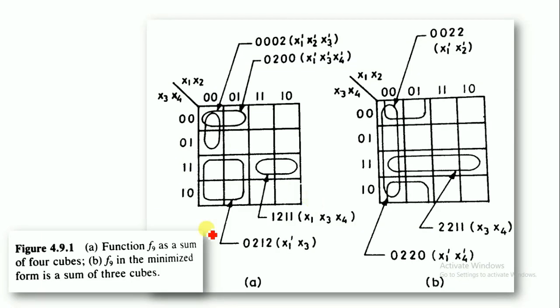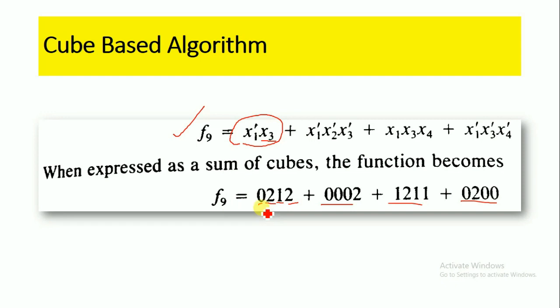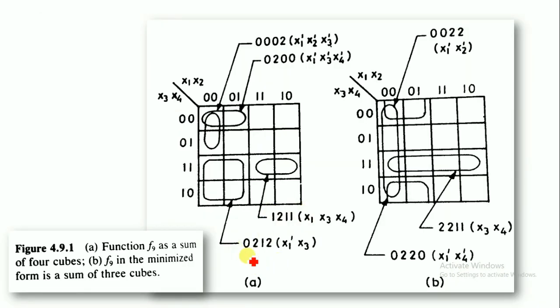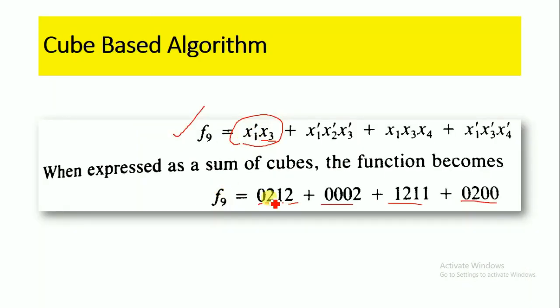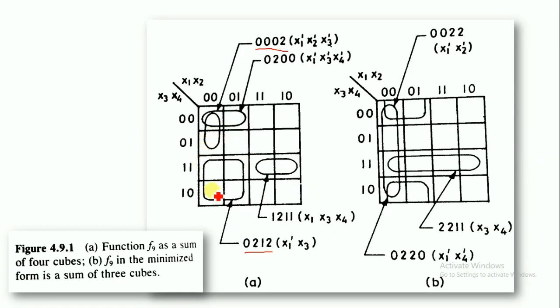We are representing in figure A the actual cubes which are present within this function f9. We have 0212, 0002, 0200, and 1211. This is the K-map representation for the given function f9. Now we will operate directly on these cubes to reduce the number from 4 to less than 4.